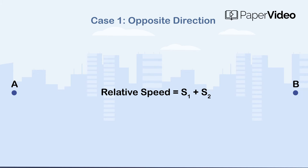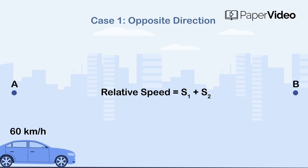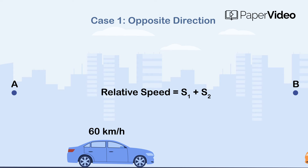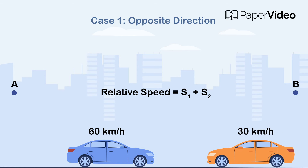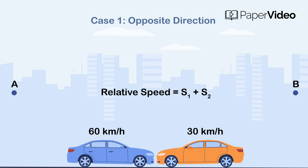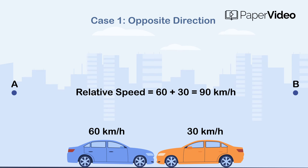For example, a car is moving from point A to point B at the speed of 60 km per hour. Another car is moving at the speed of 30 km per hour from point B to point A. What is the Relative Speed of car A with respect to car B? In this example, the cars are moving in the opposite direction. So, the Relative Speed will be 90 km per hour.